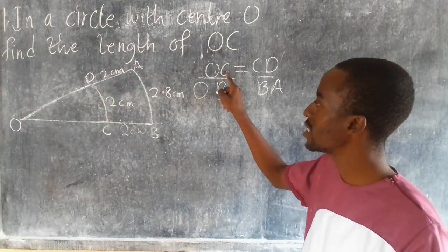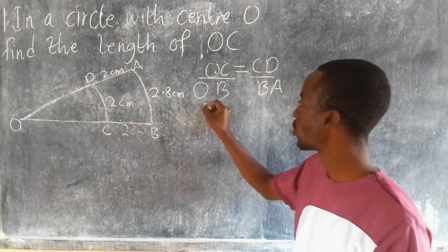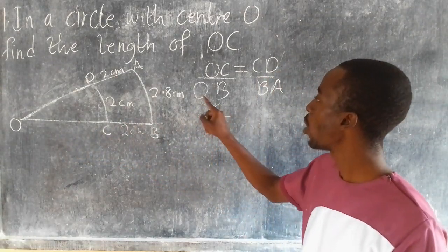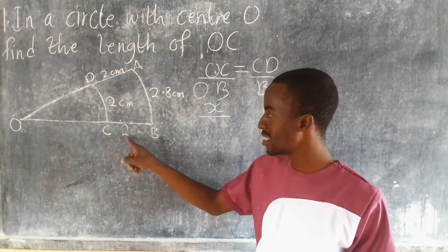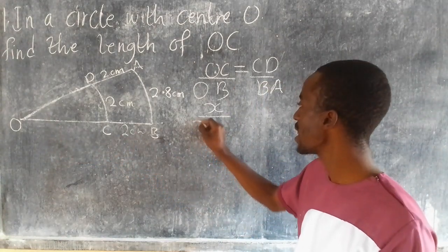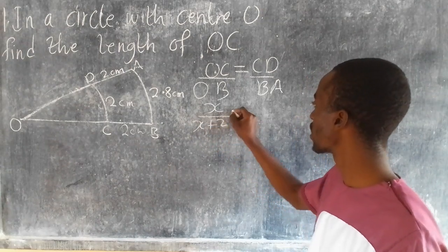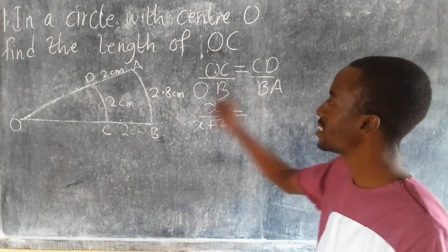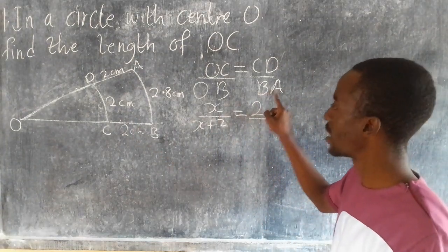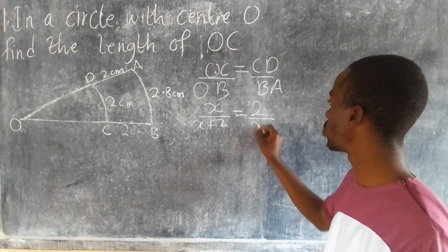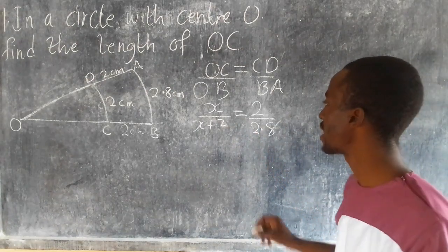So OC we don't know, so we call it X. Over OB - this segment plus this segment - we're going to say X plus 2, equal to CD. CD is equal to 2, over BA. BA which is 2.8.